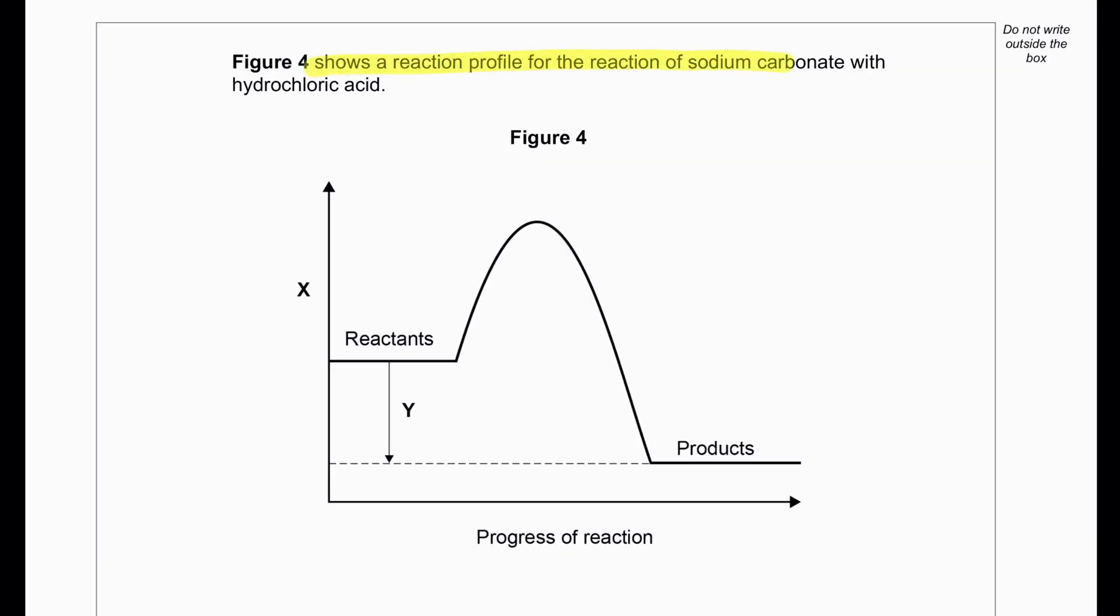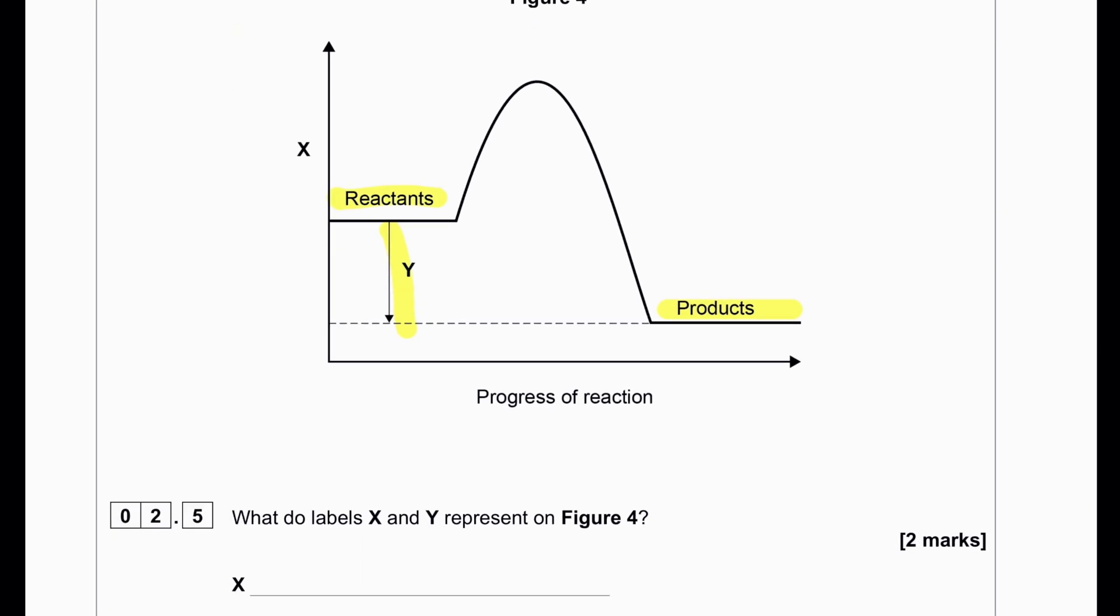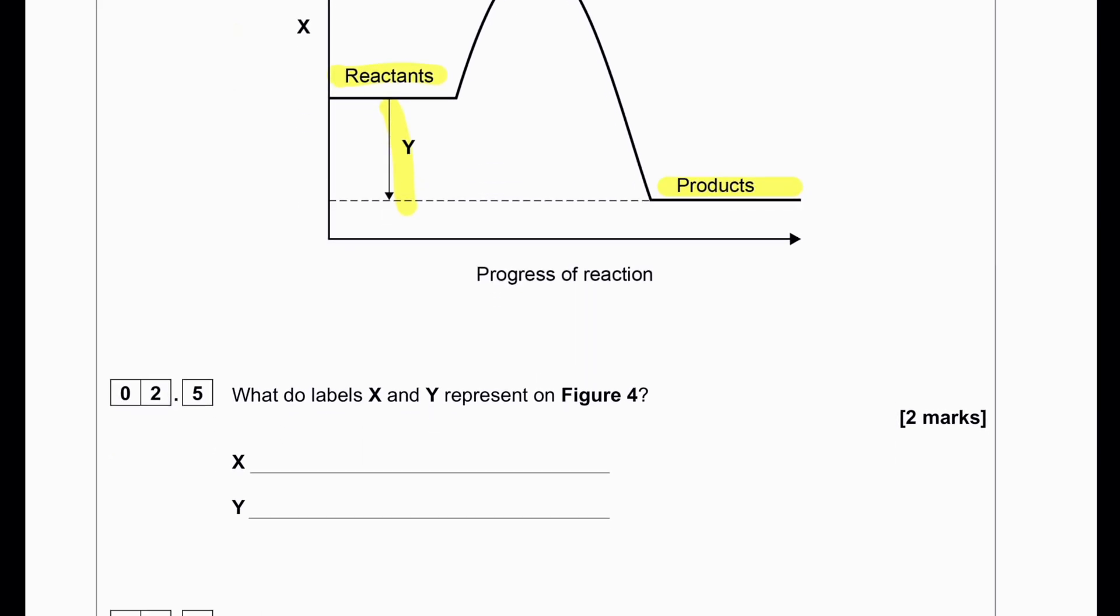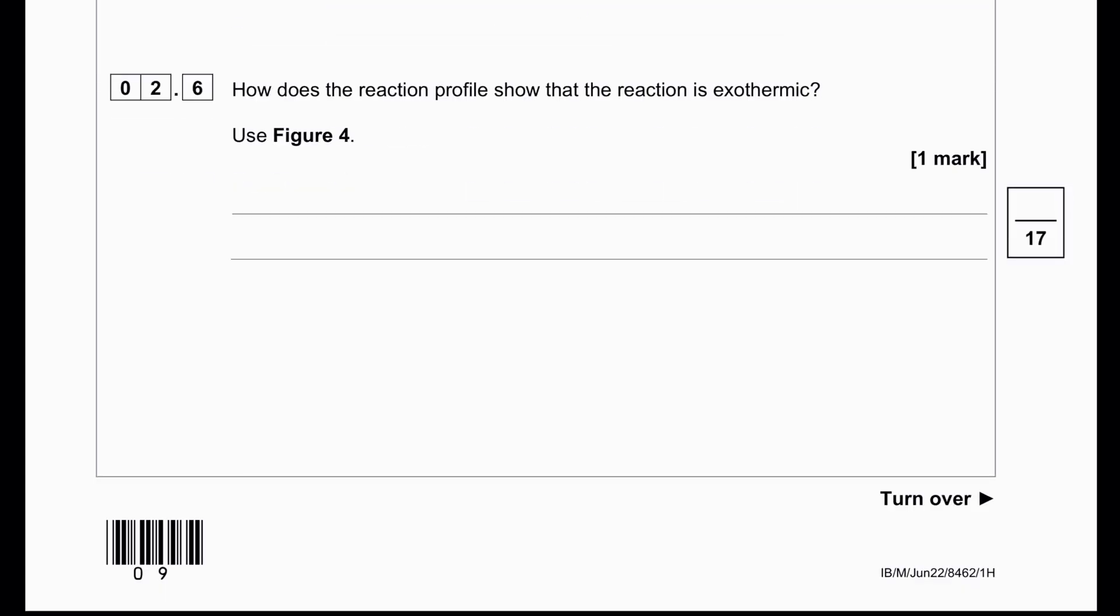Figure 4 shows the reaction profile for the reaction of sodium carbonate with hydrochloric acid. We can see reactants, products and overall energy change. X represents energy. How does the reaction profile show the reaction is exothermic? Products have less energy than reactants, so we'll say level of products is below the level of reactants.